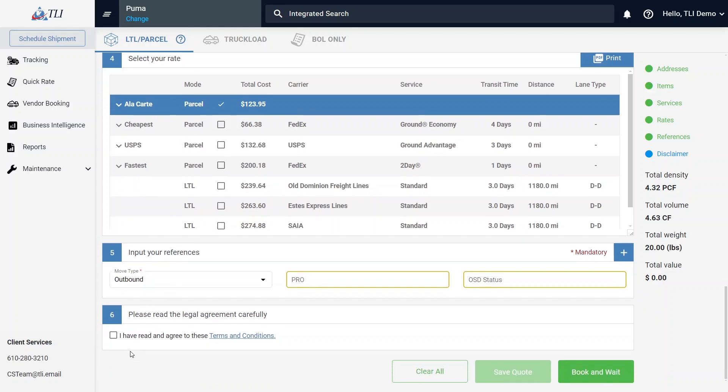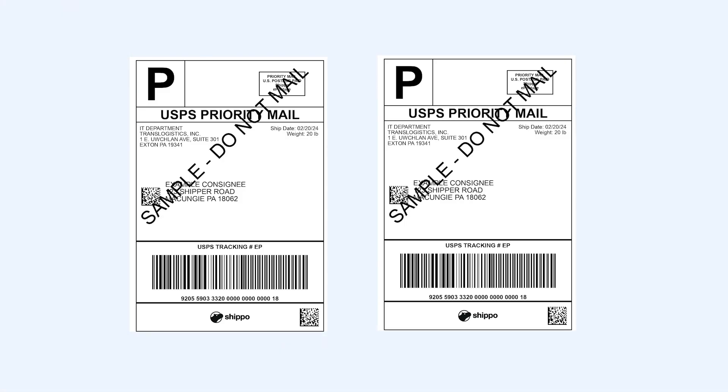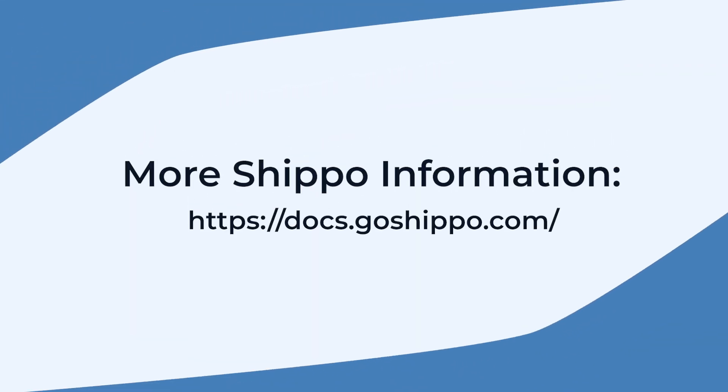Agree to the terms and conditions and then select Book and Wait. Your shipping labels will be ready to print. If you are utilizing parcel services, you will need to schedule a pickup directly with the carrier. This service is to purchase the shipping labels through Shippo and will not schedule a shipment for you. For more information on Shippo-related troubleshooting, please visit Shippo's documentation page at docs.goshippo.com.